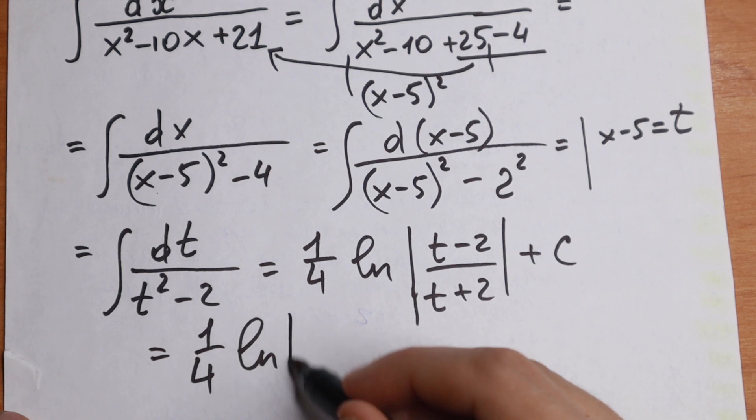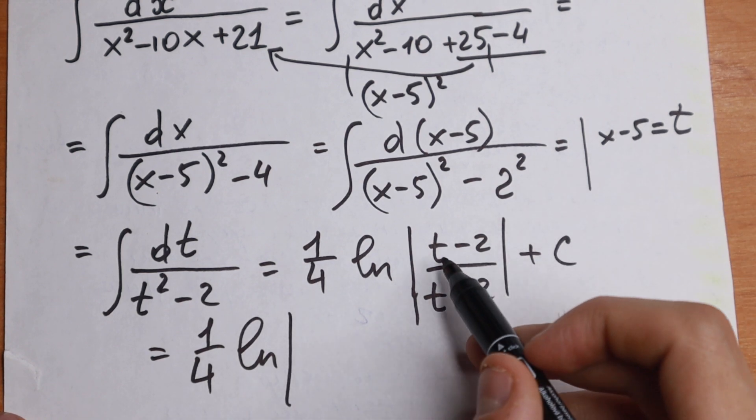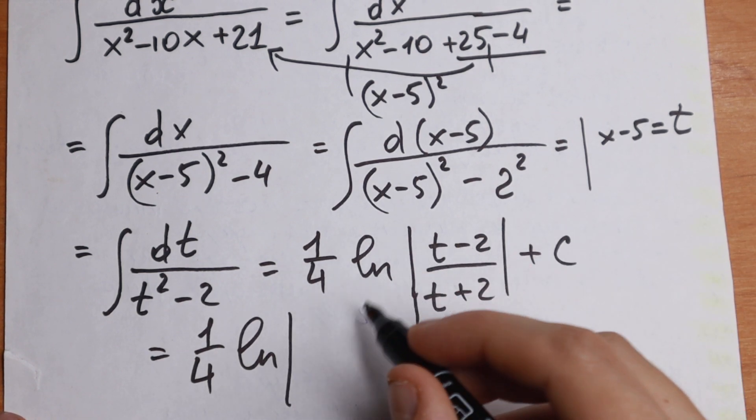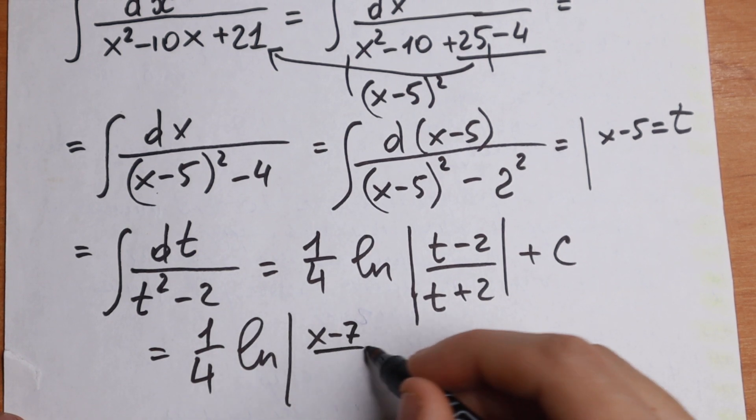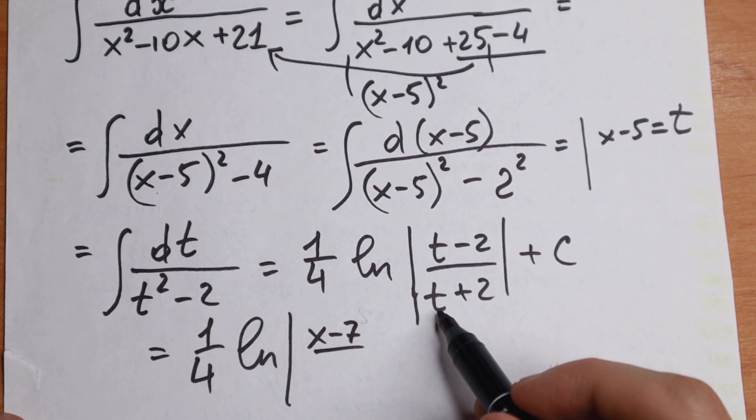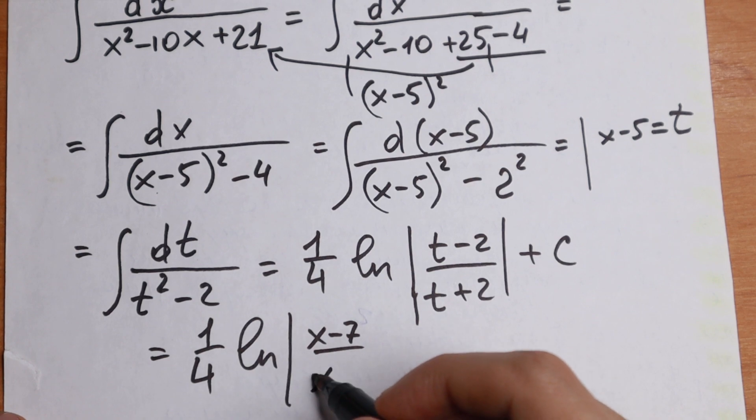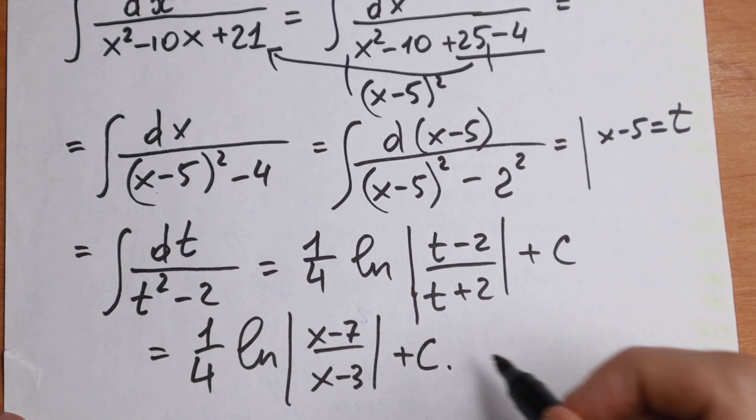And in our absolute value, if we plug in x minus 5, we will have x minus 5 minus 2. We will have x minus 7. And in denominator, we will have x minus 5 plus 2. We will have x minus 3. And plus C.